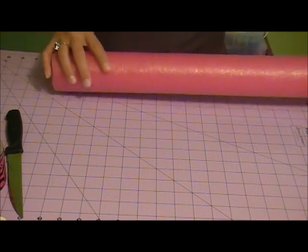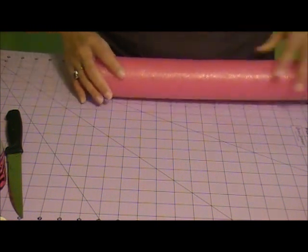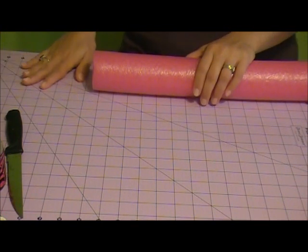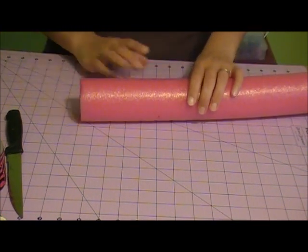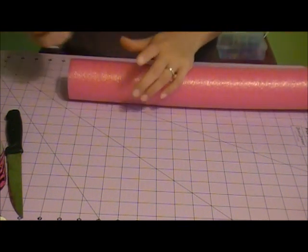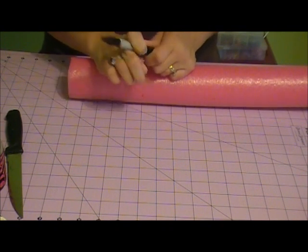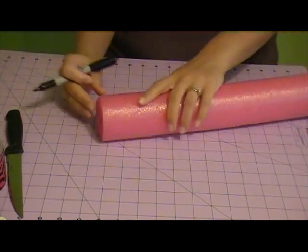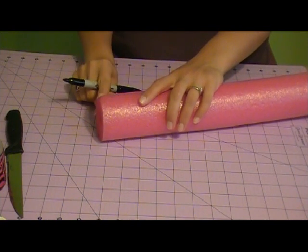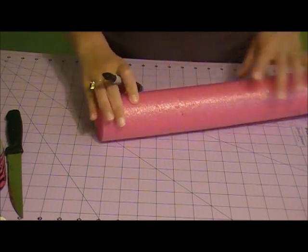Take your pool noodle and I suggest using a craft mat or rotary mat to protect your table from when you're cutting. Now what you're going to do is use a sharpie marker to help make sure that you're marking the right end and marking it the correct way.